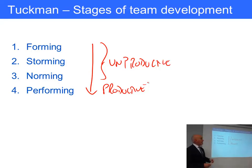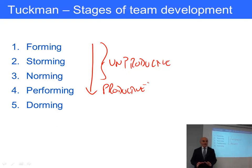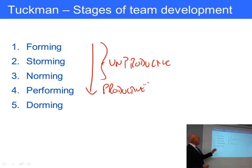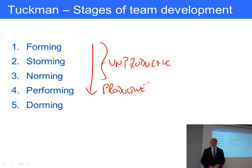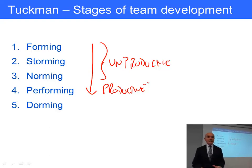The final stage is adjourning — where the group has really run its course and has little purpose anymore. He recognized that you might have a group that meets every Friday afternoon simply because it always has, but the original purpose has long since gone. This is a warning that maybe the team should be disbanded, because they're not achieving anything the organization is actually interested in.